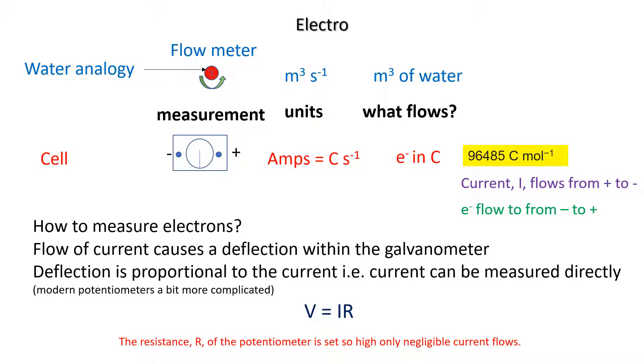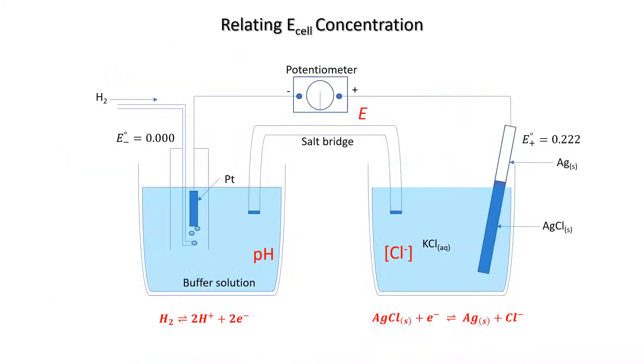In a potentiometer the resistance is set extremely high so that only negligible current flows.